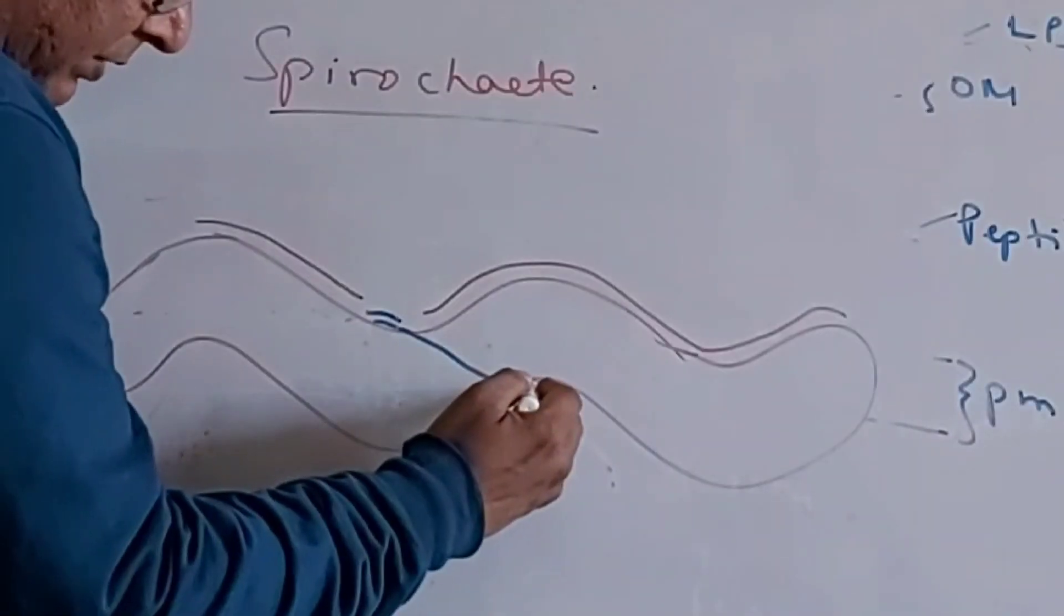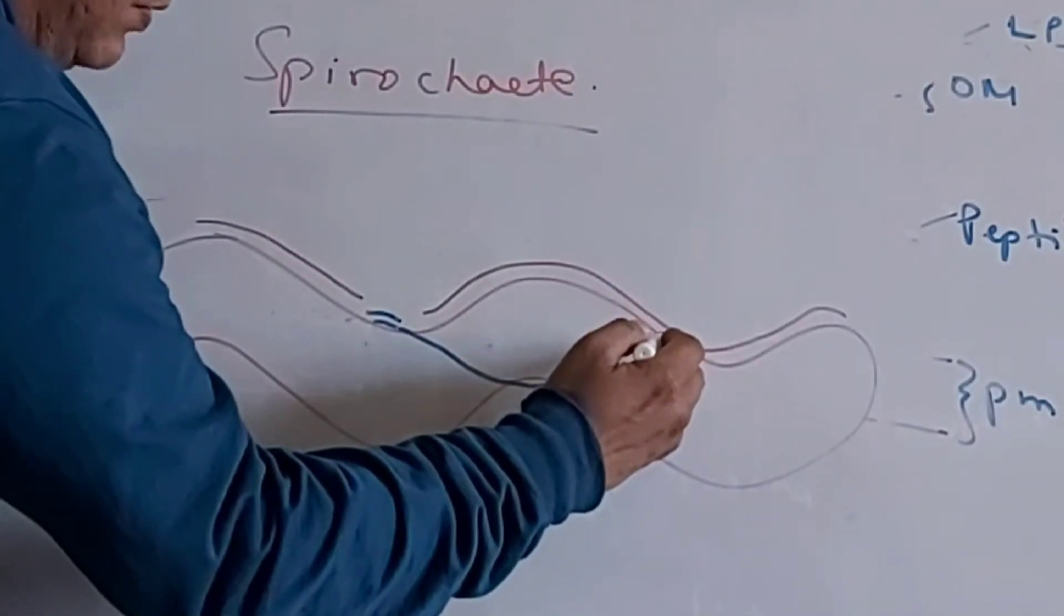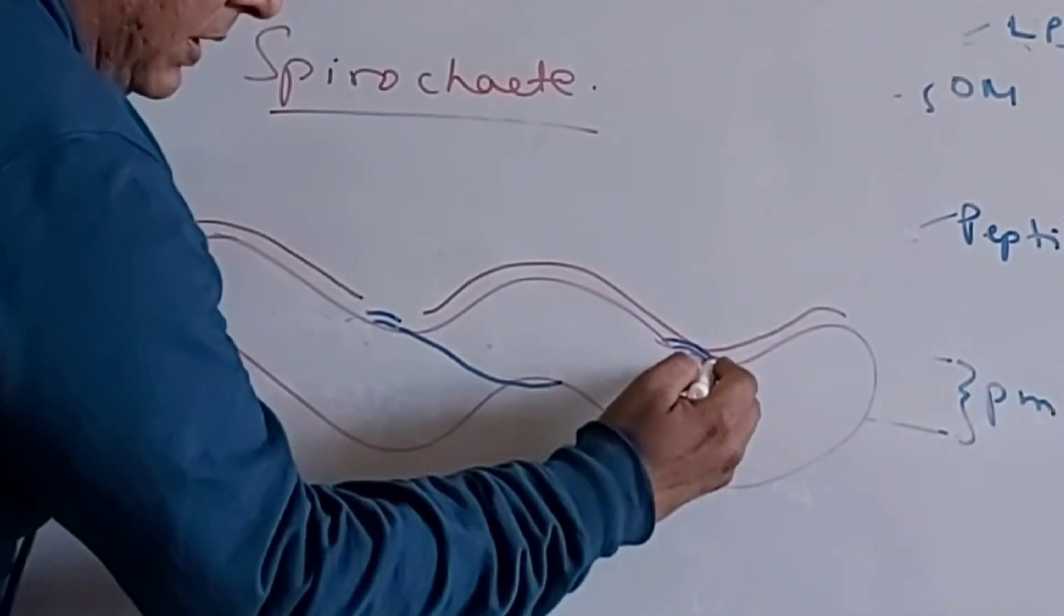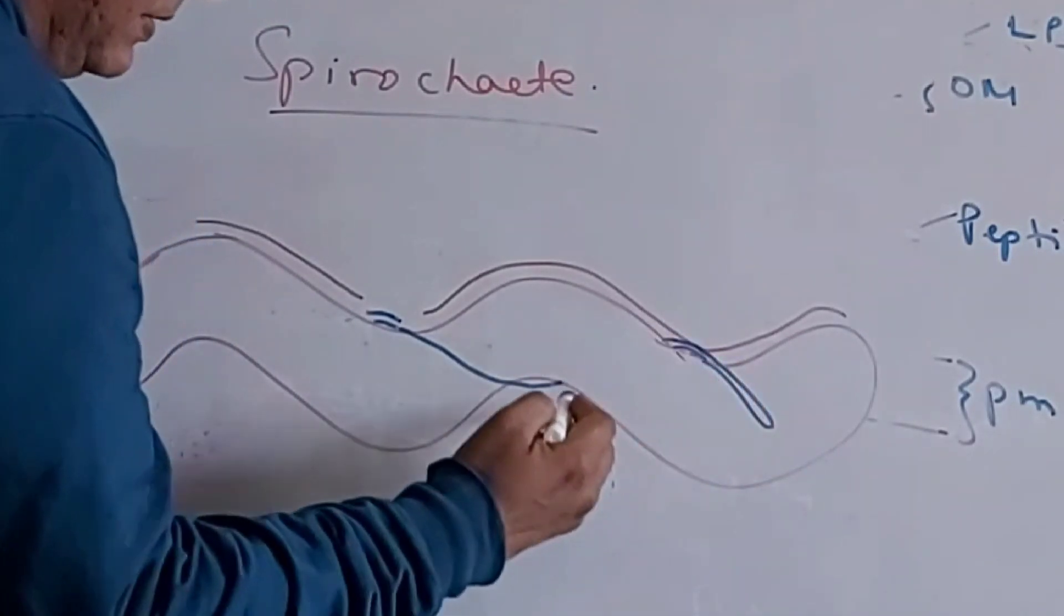Like this, it goes like this, in a spiral way. It goes in a spiral way. Maybe it will end here, it is ending here.